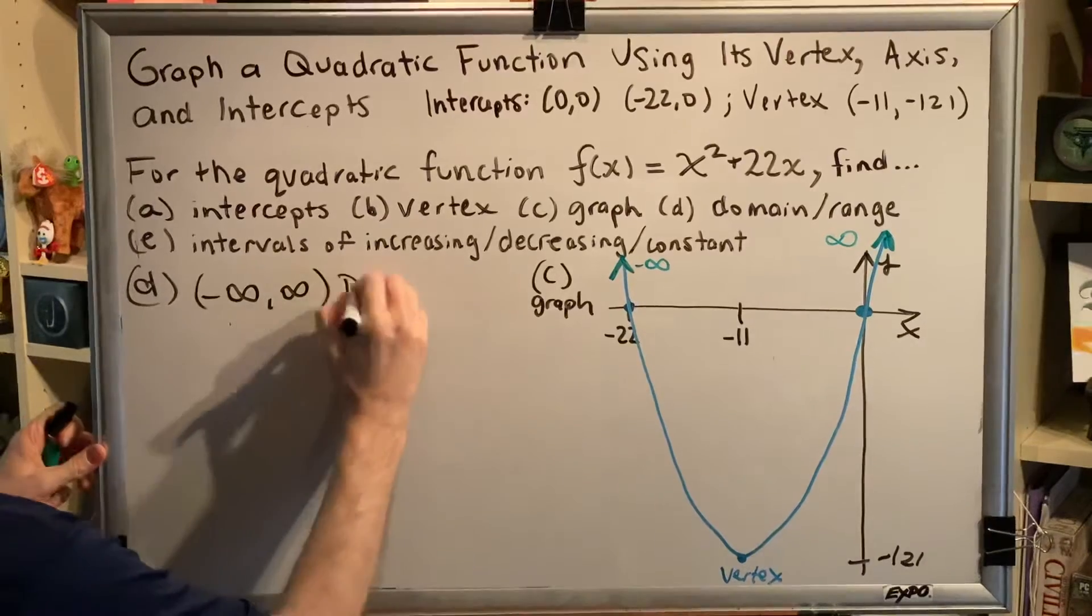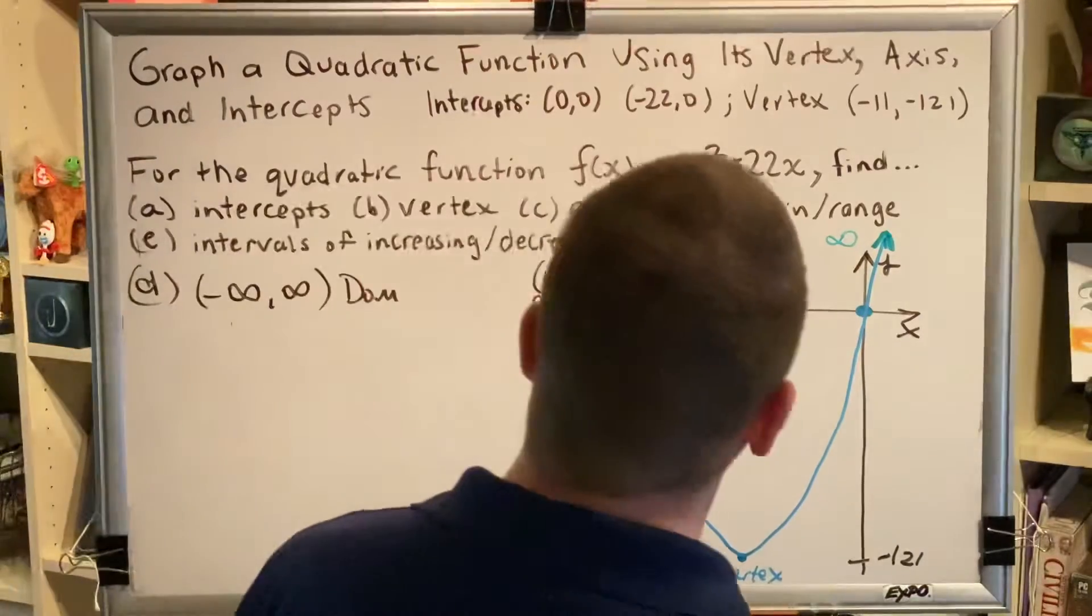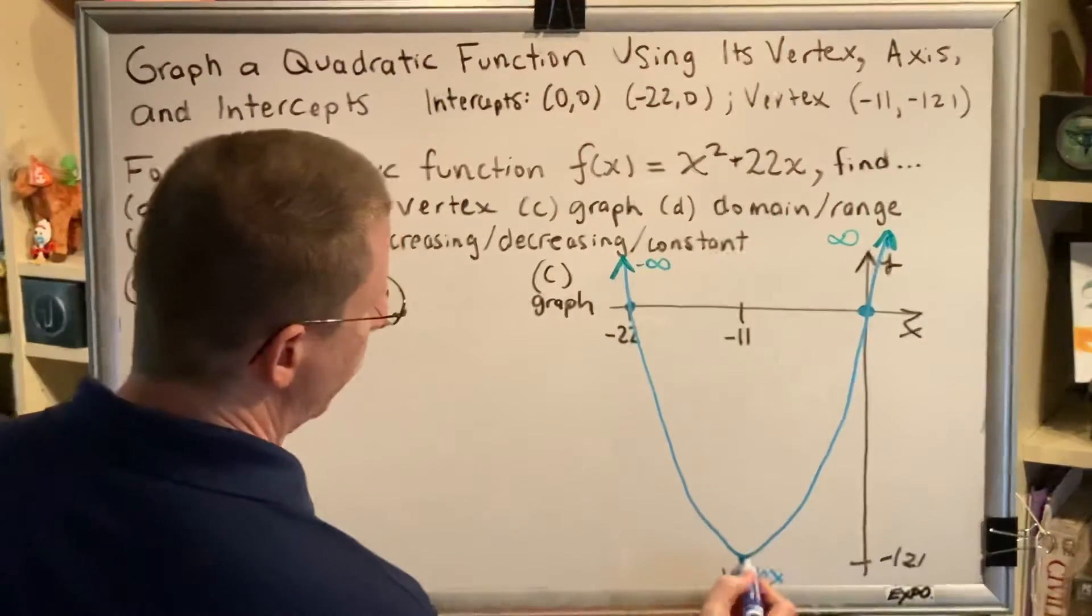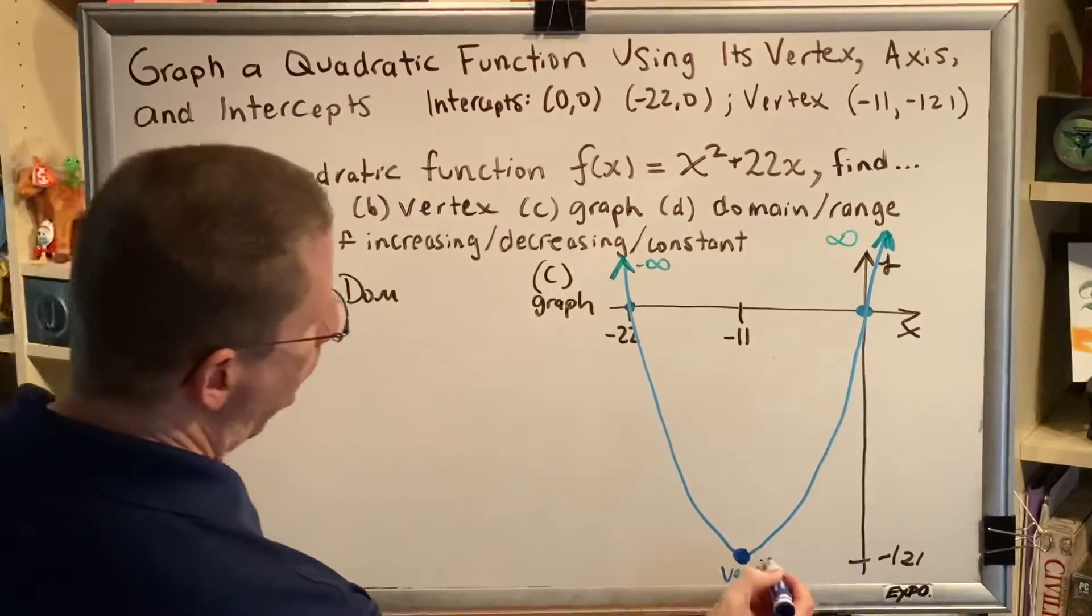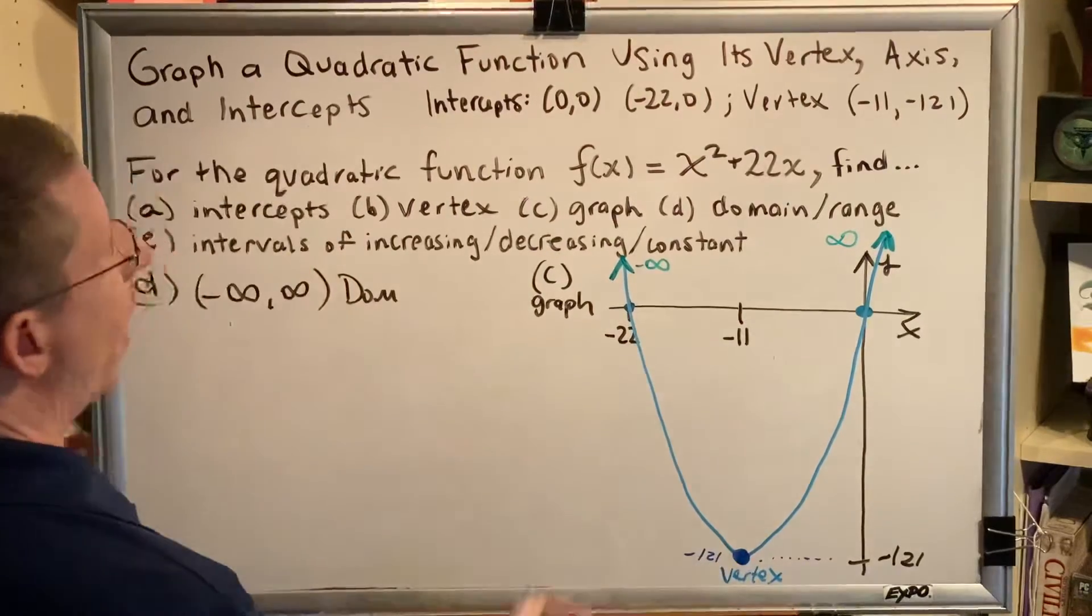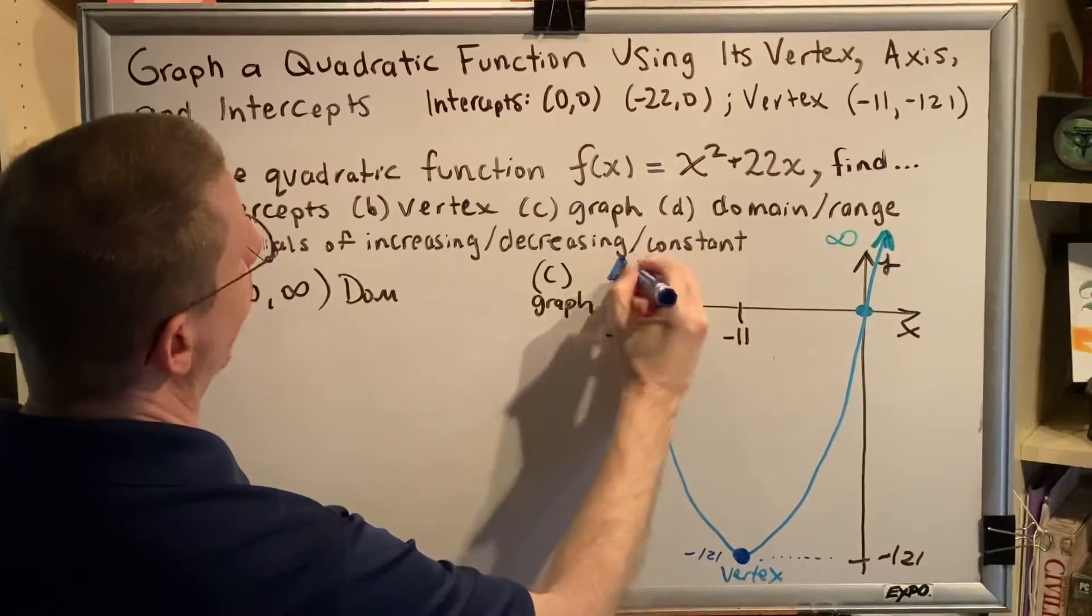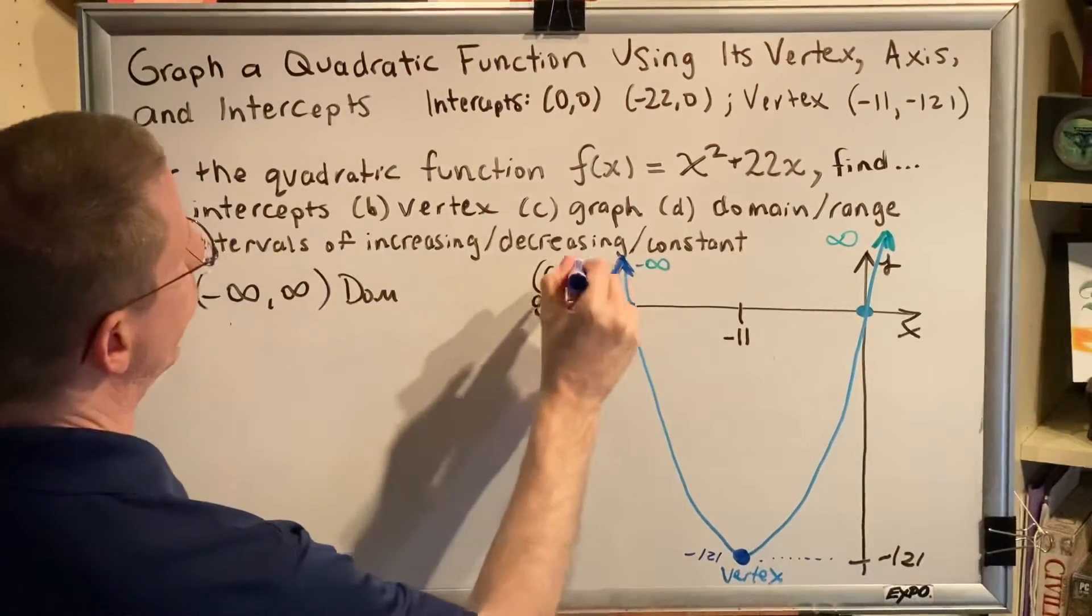And that brings us on to our range. Our range is going to be measured by going from the lowest to the highest. The lowest point on our graph would be this one right here, which has a y coordinate of negative 121. And the highest is represented by this arrowhead. Or this arrowhead. They're both going up forever. And so, that would be a positive infinity.